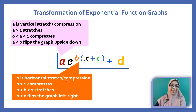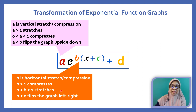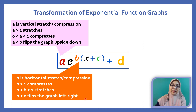B is the horizontal stretch or compression. When B is greater than 1, the graph is compressed. When B is a fraction, the graph is stretched. When B is negative, the graph is flipped left-right.